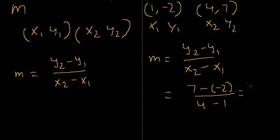So we would have 7 plus 2 over 3, which is 9 over 3, which is equal to 3.